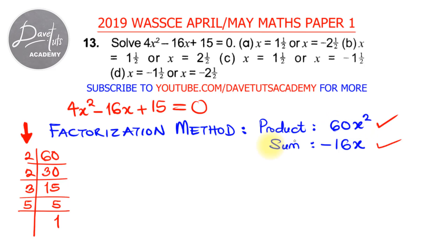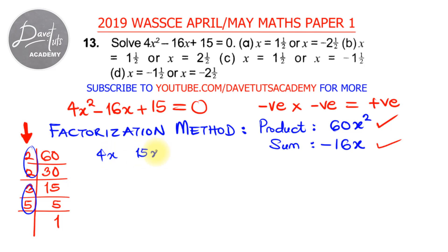The product is positive 60x squared, and we know by the rules of algebra that multiplying two negative numbers gives a positive number. For example, we could use 2 and 2 then 3 and 5: 2 times 2 is 4 and 3 times 5 is 15, giving us 4x and 15x. Their product would be 60x squared.